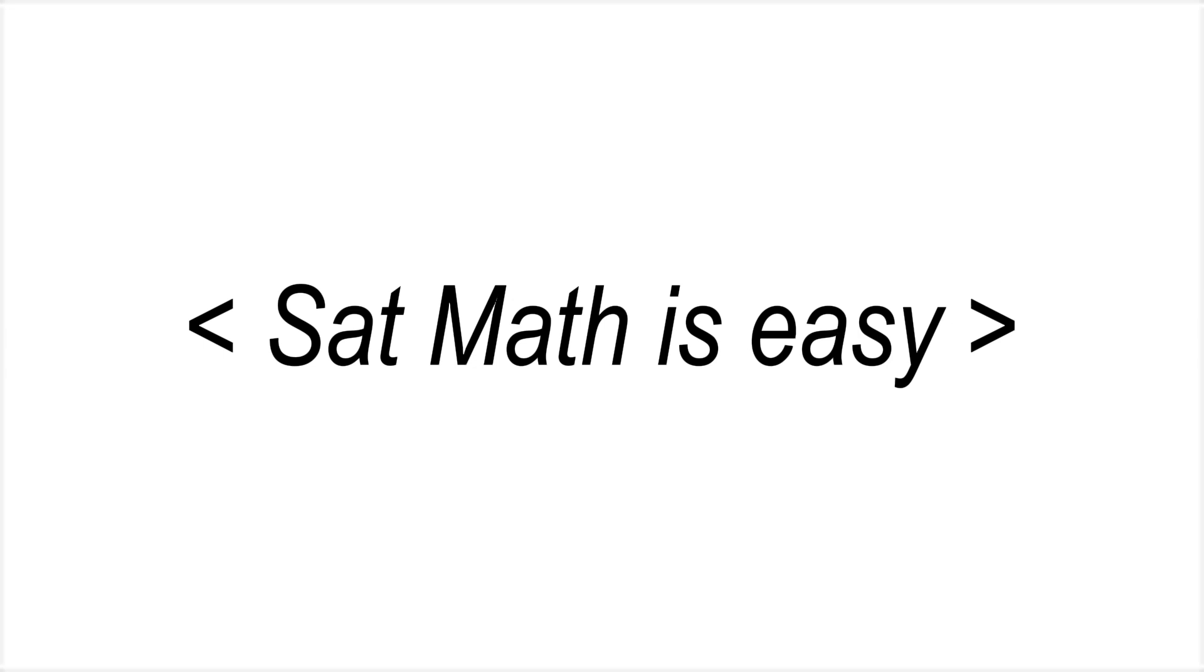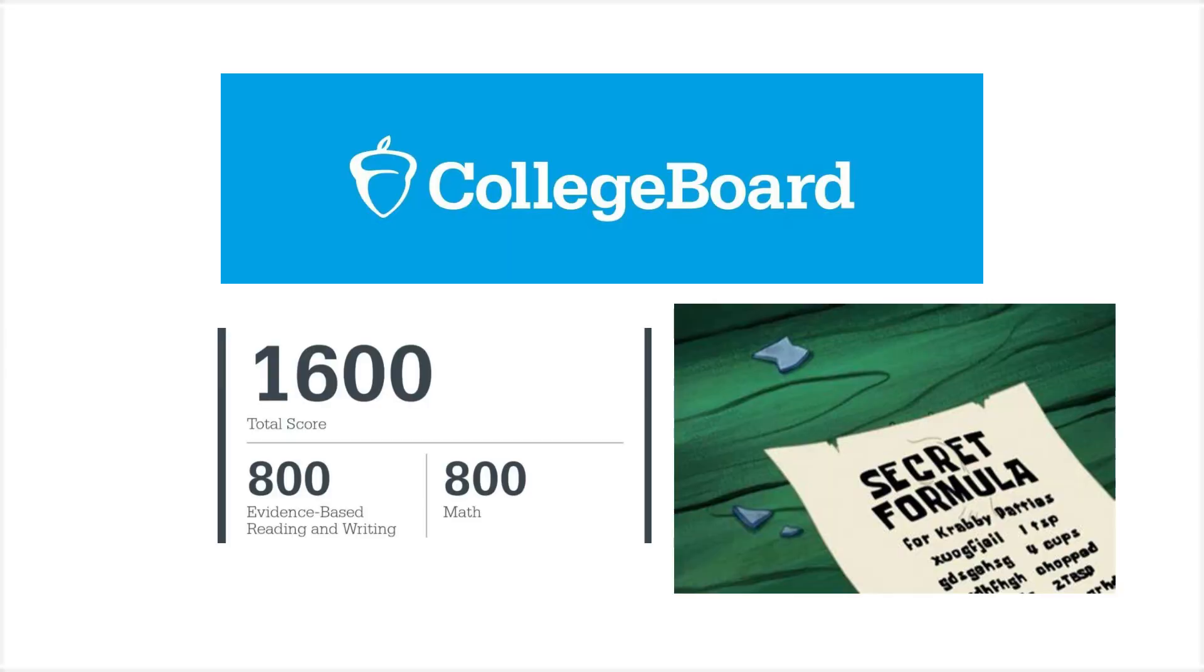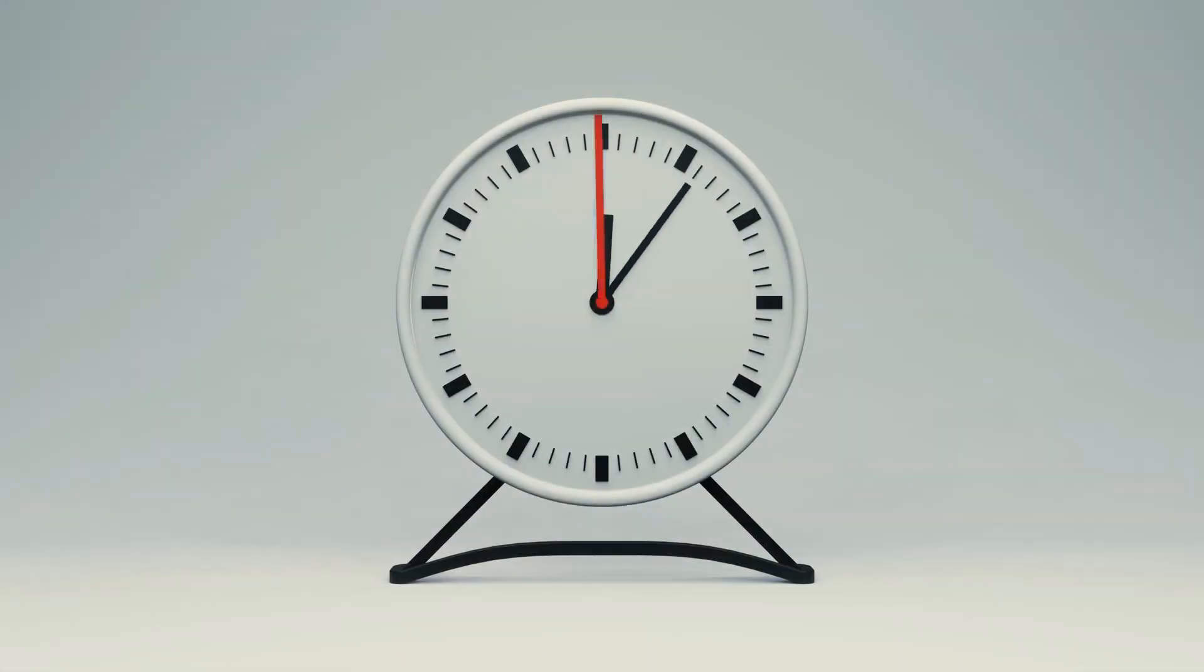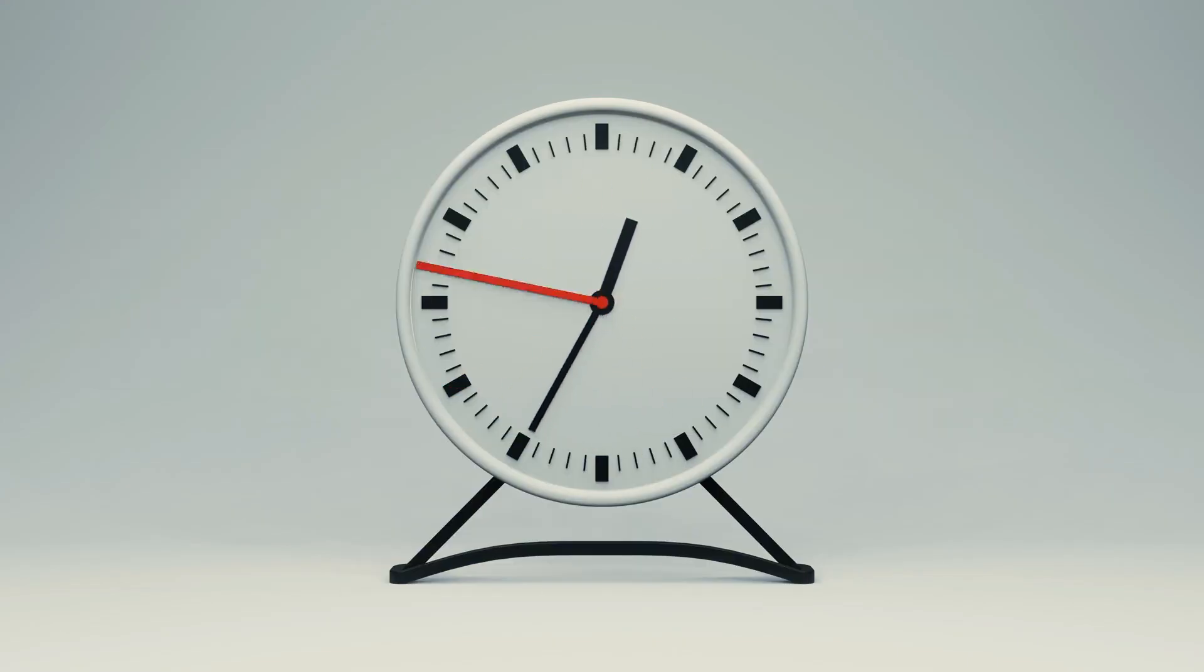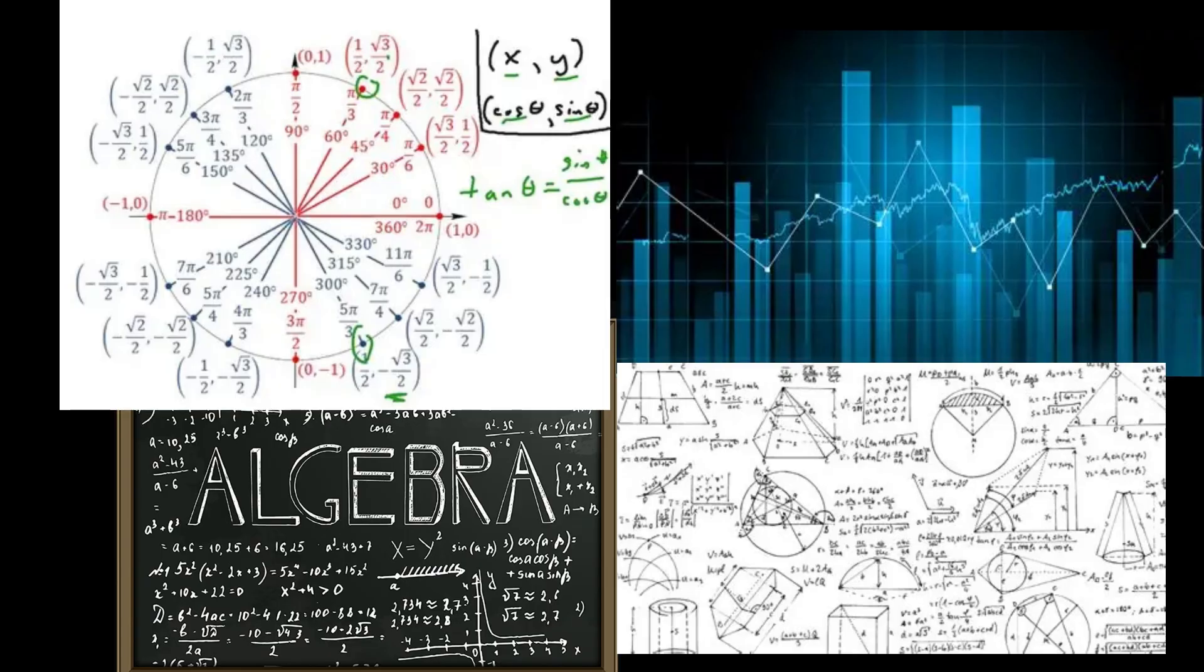SAT math is easy, at least once you figure out College Board's secret formula. But what is it? Of course you can spend hours trying to figure out every single problem from the question bank, or you could simply figure out the four categories that tie everything together.